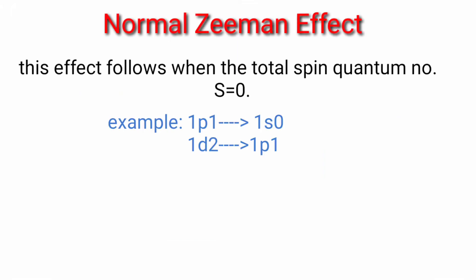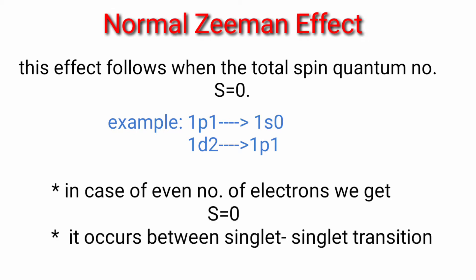For Zeeman effect, we have first normal Zeeman effect. This effect follows when the total spin quantum number of an atom is zero. For example, 1P1 to 1S0 transition, we have a singlet line here. The possibility is that if atoms have even number of electrons, then spin quantum number is zero. It occurs between singlet-singlet transition. The spin has zero. This is normal Zeeman effect.